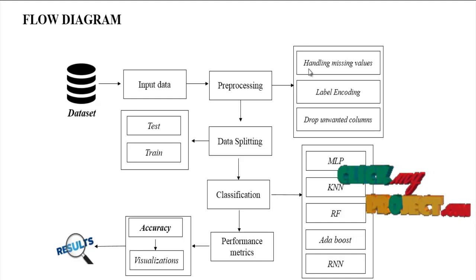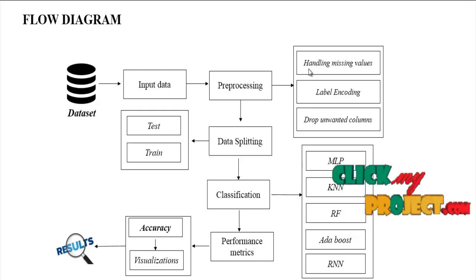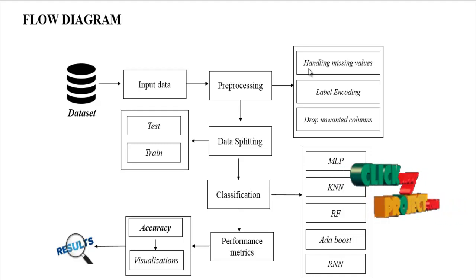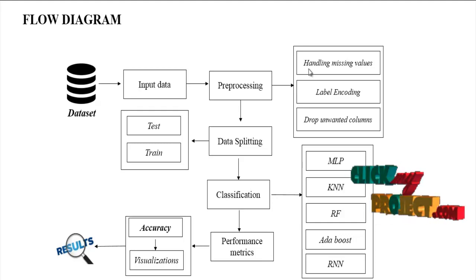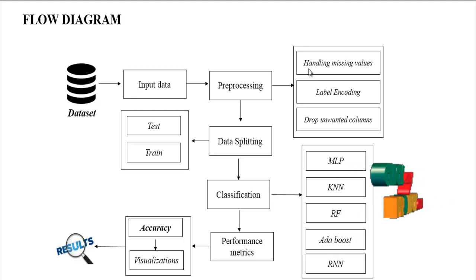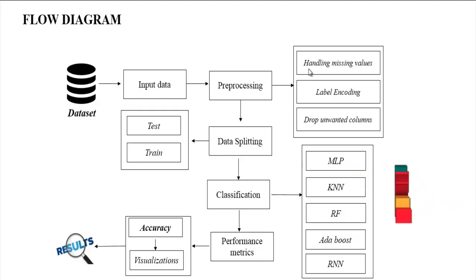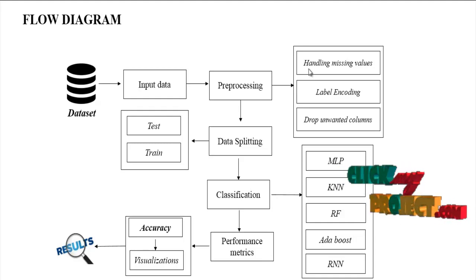In our input dataset, we check for any missing columns or missing values in a particular column. We avoid these columns if missing values occur, and replace those missing values with zeros or null values. Then we implement label encoding, which means we encode the data into numeric values.